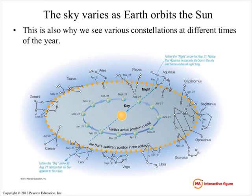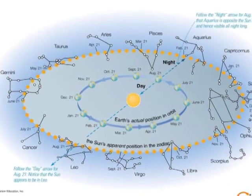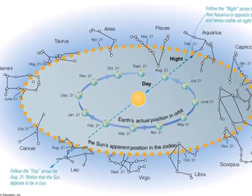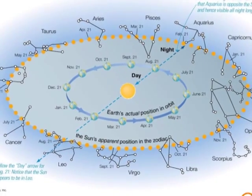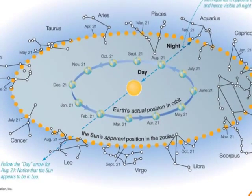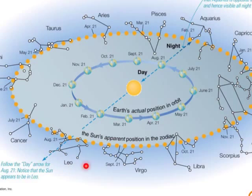One last slide. I like this diagram because you can see that the sun passes against different background stars. If we pick on February again, the sun looks like it's going through Aquarius. But can you see that at nighttime in February, high up in the nighttime sky, we're going to see the constellation Leo?